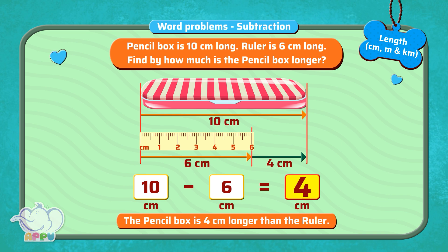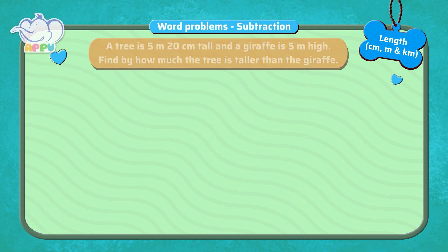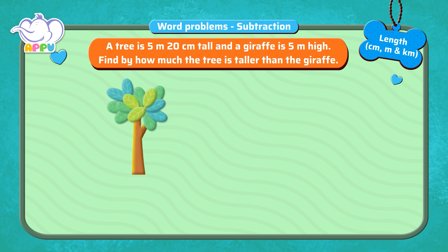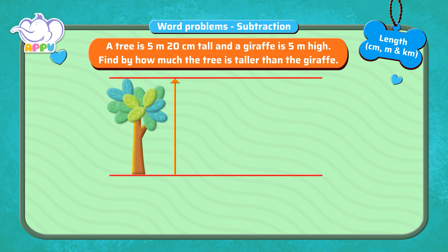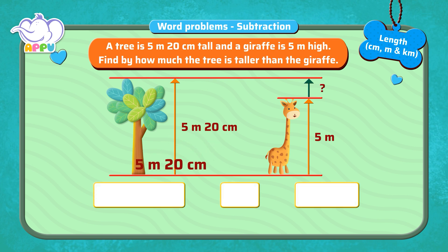Amazing! A tree is 5 meters 20 cm tall, and a giraffe is 5 meters high. Find by how much the tree is taller than the giraffe. To find which is taller, we subtract each of their lengths. 5 meters 20 cm minus 5 meters is equal to...